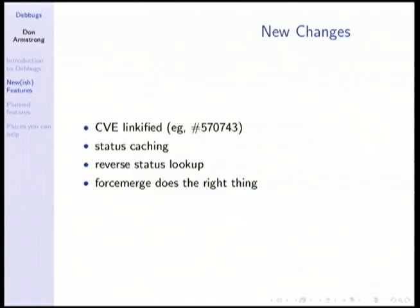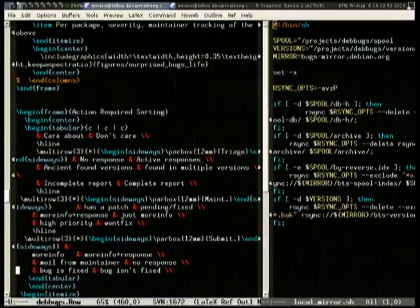So there hasn't been a huge number of changes, but some of these are pretty major. The first one is just fun to show: you can now view CVEs that have been linkified. This is the type of change that anybody here could do — it's a simple regex that looks for CVEs. You can test it using local Debbugs yourself and you could have implemented it.